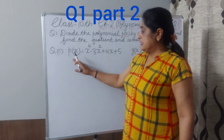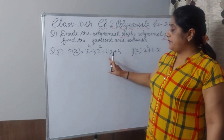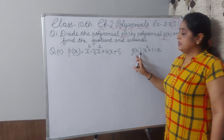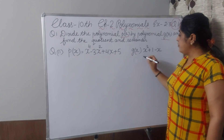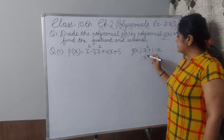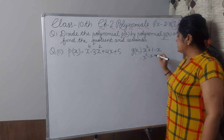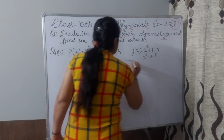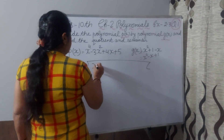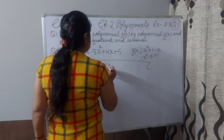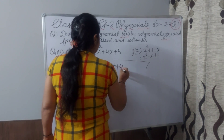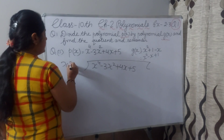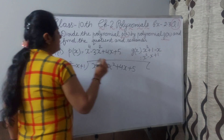Second part. Check this dividend — it is in standard form. But the divisor is not in standard form. First convert it into standard form: x² minus x plus 1. Now we will divide x⁴ minus 3x² plus 4x plus 5 by x² minus x plus 1.